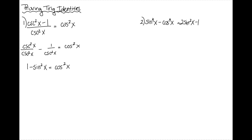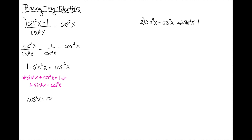Now I'm going to use the Pythagorean identity. I know that sine squared x plus cosine squared x equals 1, so if I subtract the sine squared over, I have 1 minus sine squared equals cosine squared. I can substitute that into this expression: 1 minus sine squared equals cosine squared, so cosine squared equals cosine squared. I proved what I needed to prove.